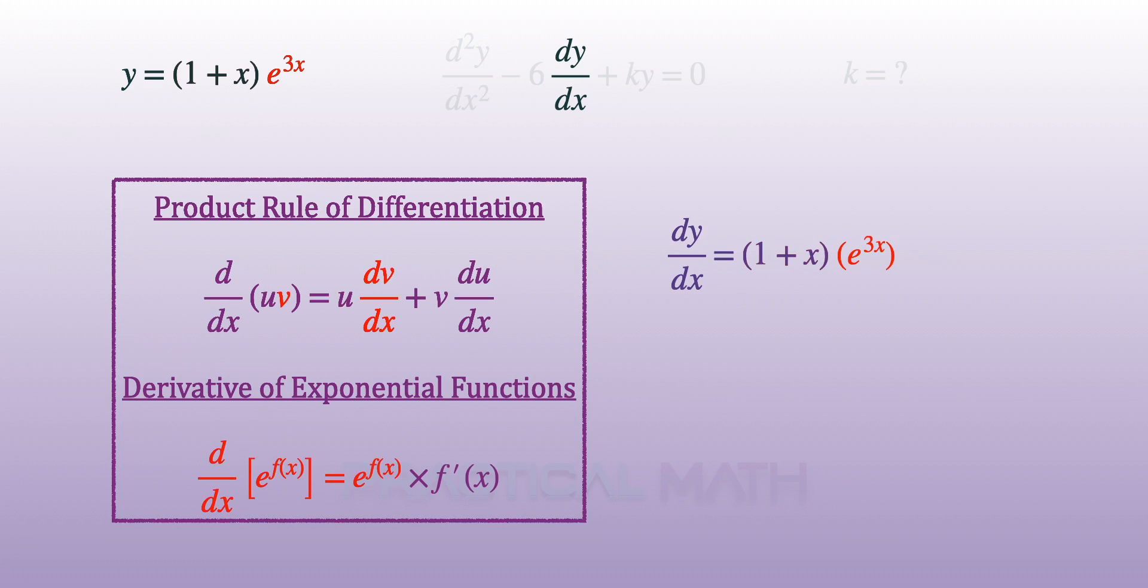Differentiating e to the power of 3x, we'll have to copy down e to the power of 3x, followed by the product of the differentiation of the power. In this case, differentiating 3x will be 3.